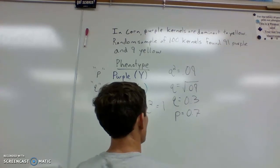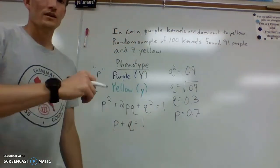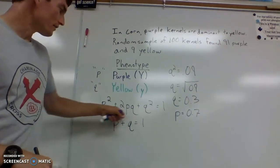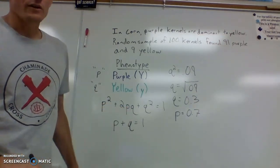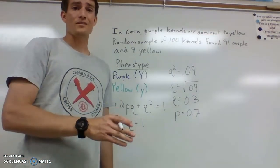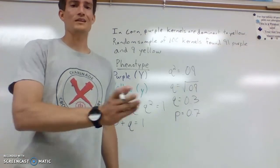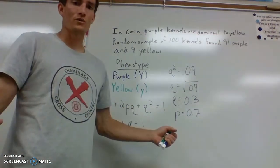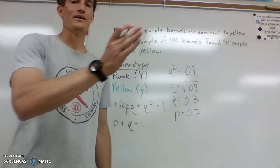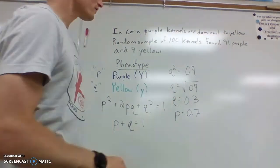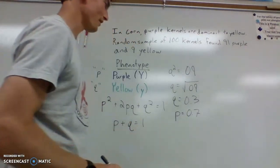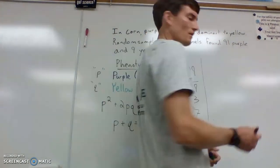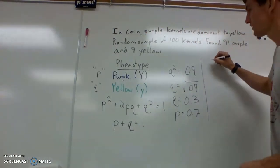Now we need to figure out the actual number of each of these alleles — in other words, the allele frequency. We can use each part of the equation. If there are 100 total kernels of corn, then there are 200 total alleles, assuming each kernel is formed by two separate alleles. So if you have 200 total alleles, how many are going to be represented by the dominant or the recessive allele?